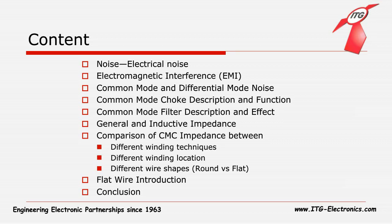We will talk about regular noise and electrical noise, magnetic interference, common mode and differential mode noise, the Common Mode Choke description and its functions, and also Common Mode filter descriptions and its effect. We will also talk about the general and inductive impedance. Then we will see some comparisons of Common Mode Choke impedance between different winding techniques, different winding locations, and different wire shapes. We will also see the flat wire introduction with a comparison conclusion.